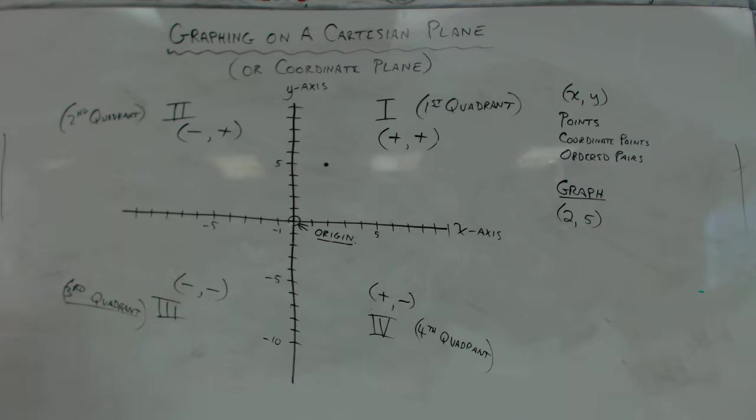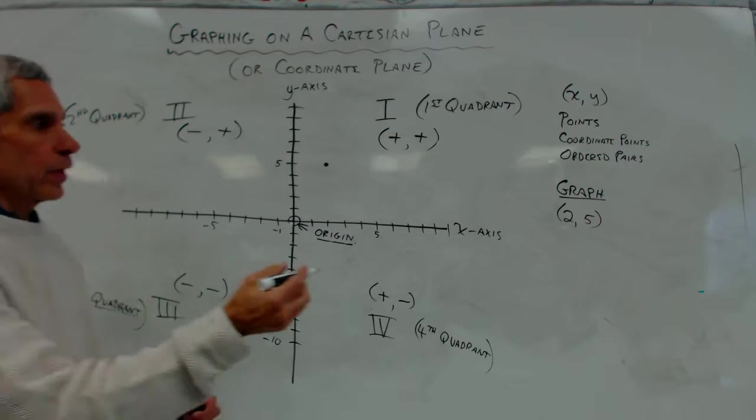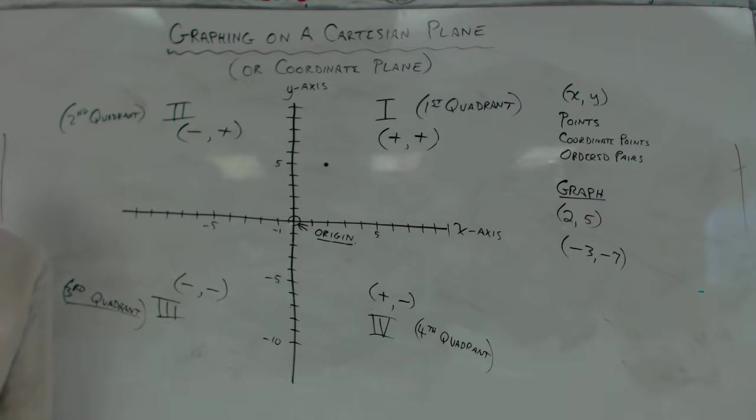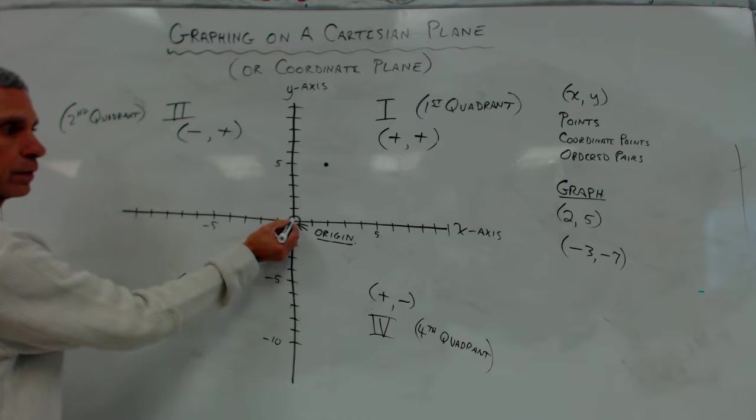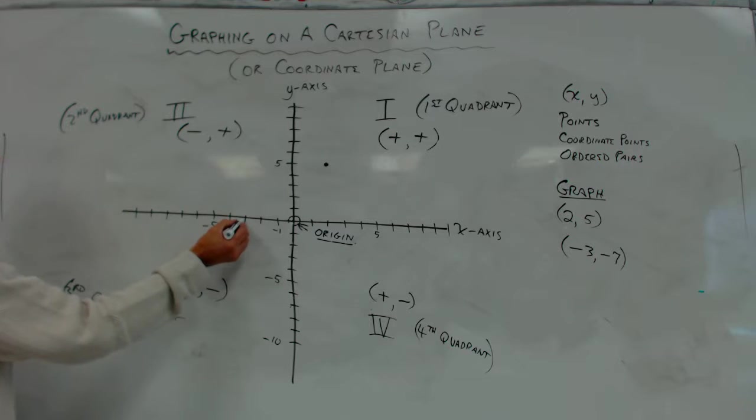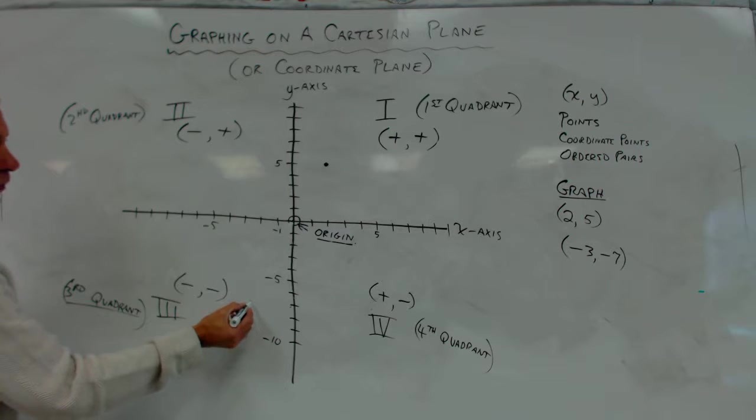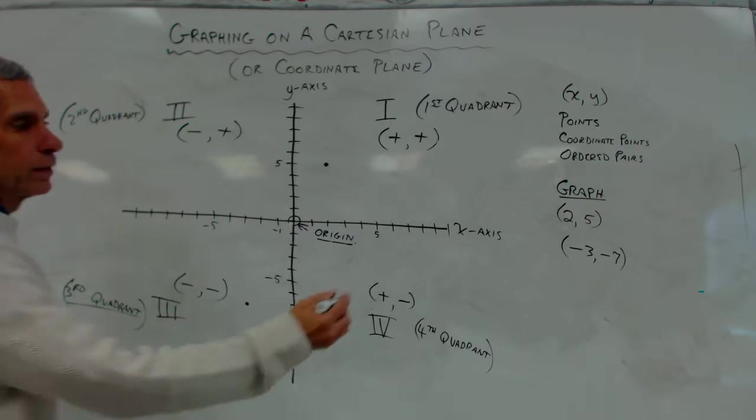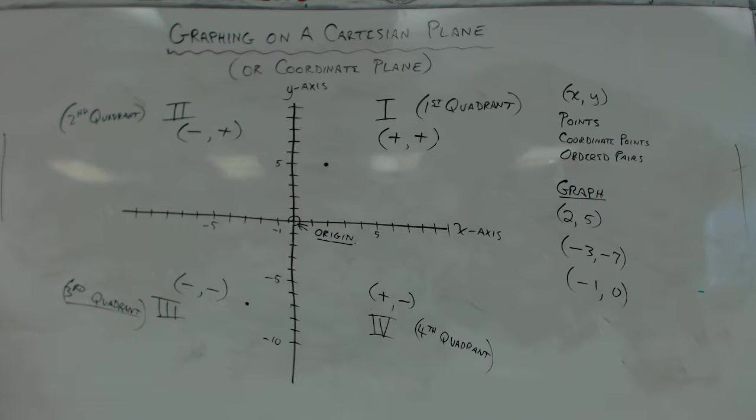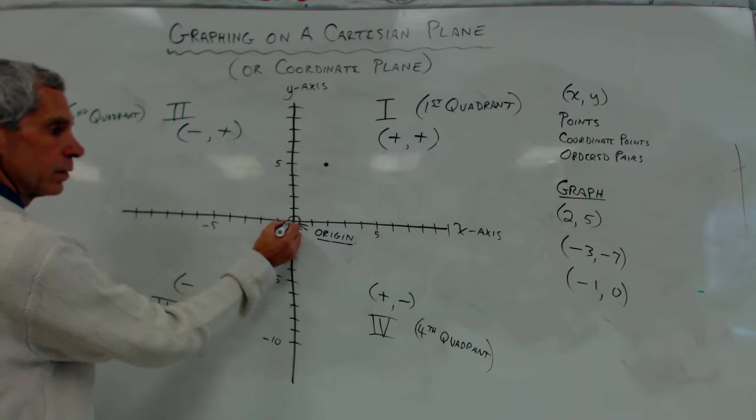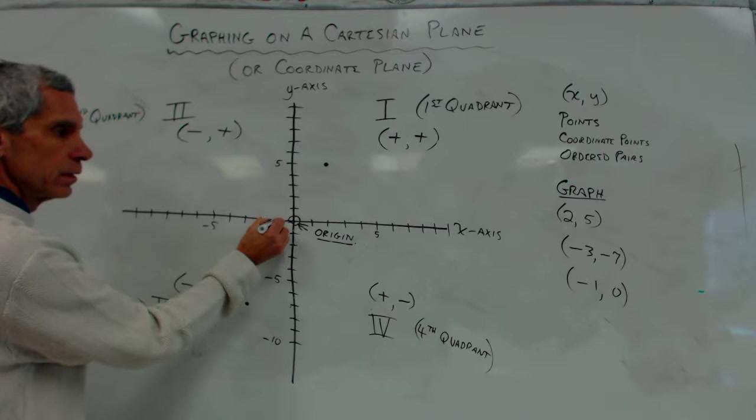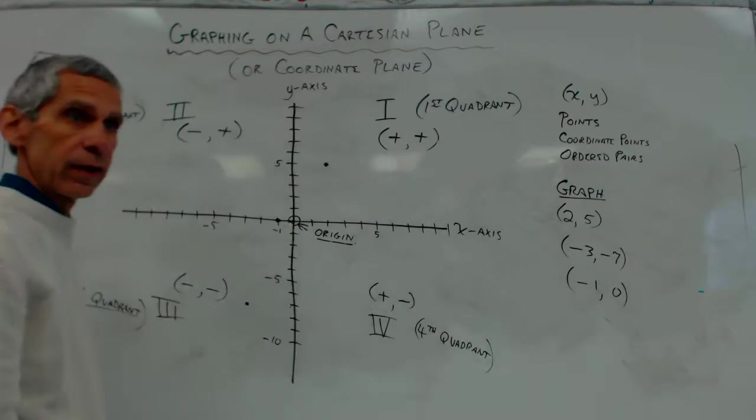Alright, so let's just plot a few more. So negative 3, negative 7. What would I do? Raise your hand. Somebody raise your hand. Okay, Rowan. You go over on negative 3. 3 over. On the left side. And then you would go down 7. Down 7, 5, 6, 7, so around there. Yes, that's good.